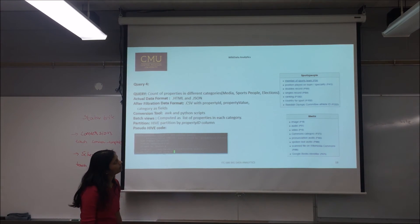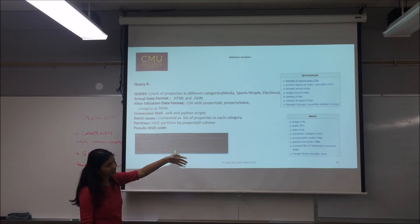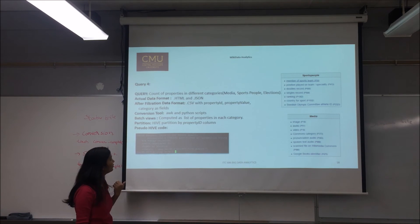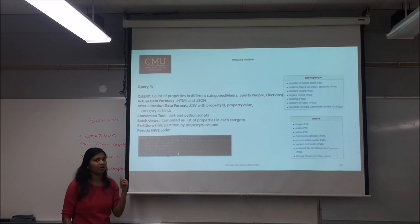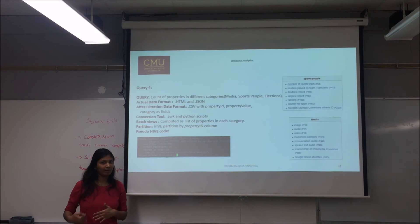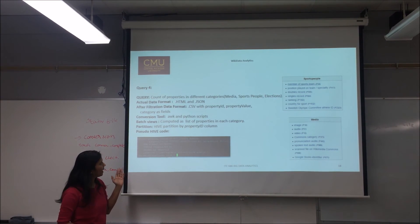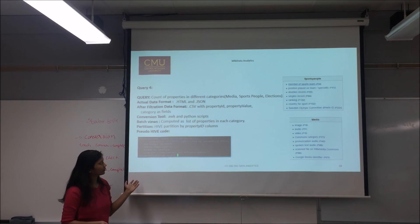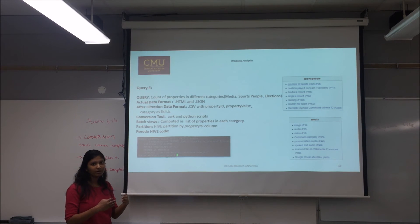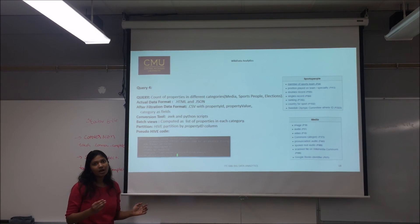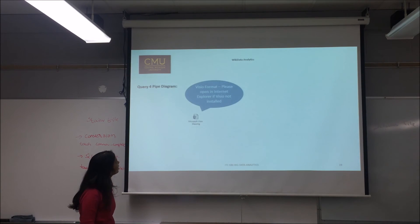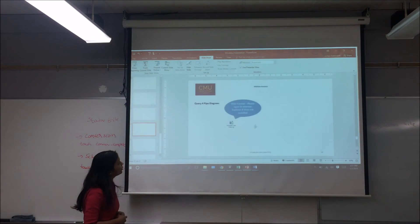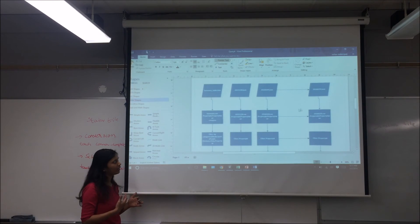You can see a snippet of how categories are segregated on the HTML page, and this is the pseudo-Hive code used. These would be partitioned based on the property ID, so different property IDs would be summed into different buckets. For the batch views, a list of properties would be computed for each category. If two or three categories are requested by the user, those category counts would be summed up and given as output. The pipe diagram deals with converting data into a CSV file.